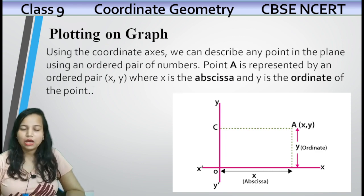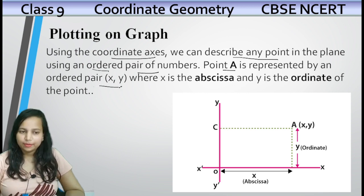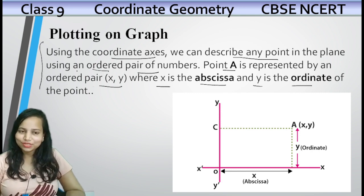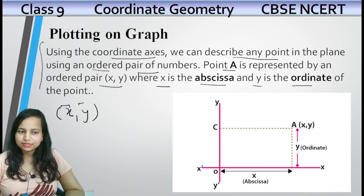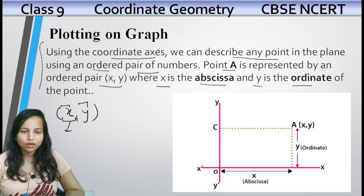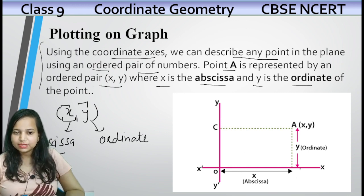Next: plotting on a graph — how you can plot the coordinates on a graph. Using the coordinate axes, we can describe any point in the plane using an ordered pair of numbers. Point A is represented by an ordered pair (x, y), where x is the abscissa and y is the ordinate. X-axis ke coordinates ko abscissa bolte hain, and y ke coordinates ko ordinate bolte hain. This is the abscissa and this is the ordinate.